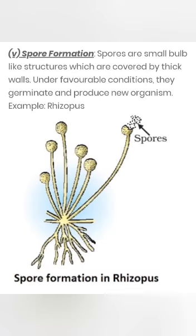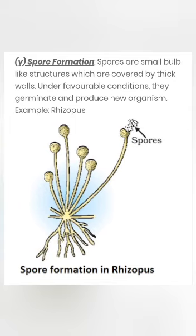Spore formation. Spores are small bulb-like structures covered by thick walls. Under favorable conditions, they germinate and produce new organisms. For example, Rhizopus. The advantage of spore formation is that since spores are covered by a hard covering known as a cyst, they can withstand unfavorable conditions. On the return of favorable conditions, the cyst bursts and the spores germinate.